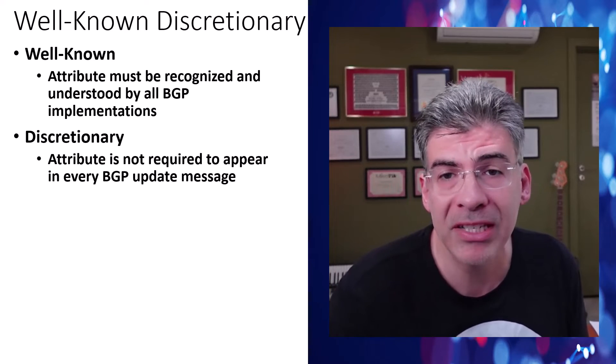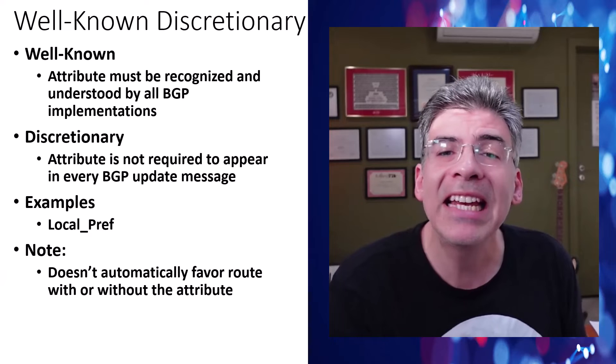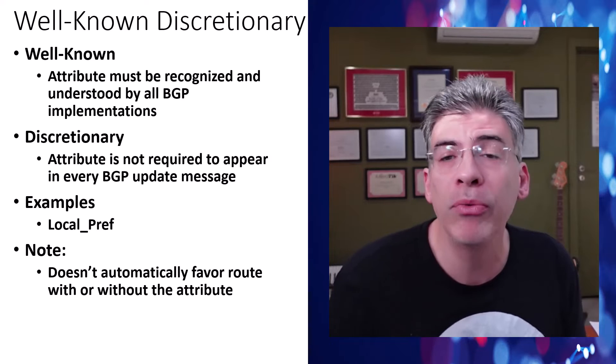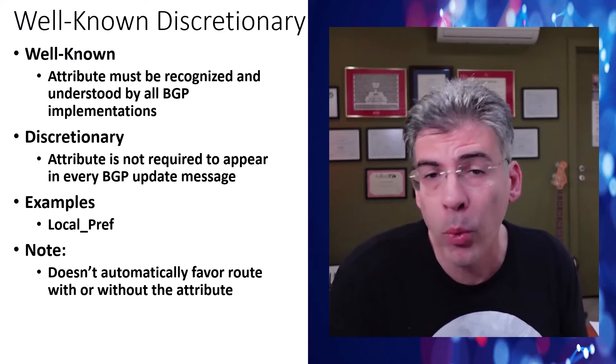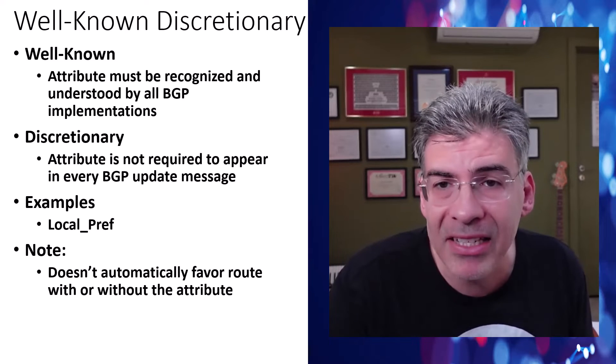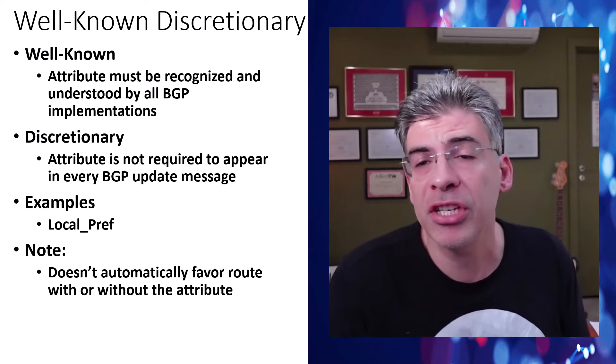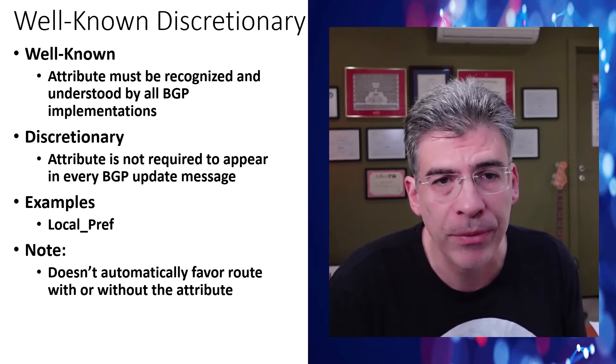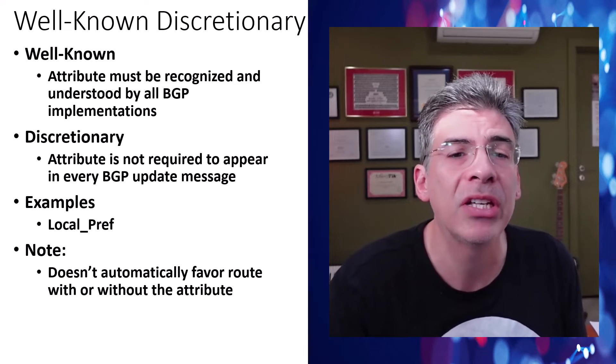Local preference is an example of a well-known discretionary attribute. Now, an interesting thing to note here is that if you're comparing two BGP routes based on a well-known discretionary attribute and one route doesn't have that attribute, the decision process doesn't automatically favor the route with or without the attribute. What will actually happen depends upon the particular attribute in question. In some cases, the route with the attribute set is preferred over the one that's not set. In other cases, such a scenario would be considered a tie and they would go on to the next BGP attribute to resolve the issue. So, you'll have to look at the particular discretionary attribute in question to know what actually happens in each case.